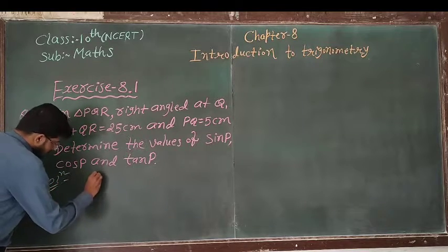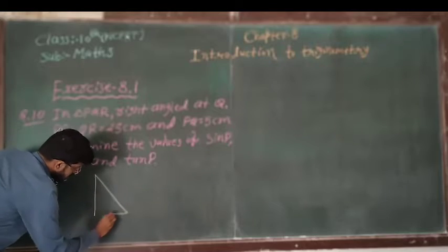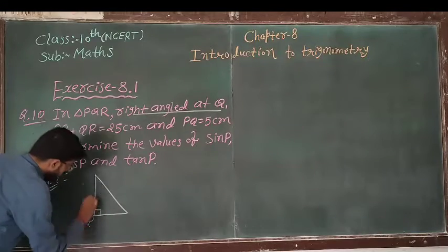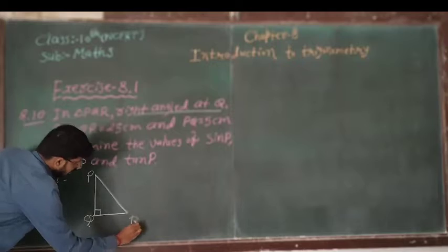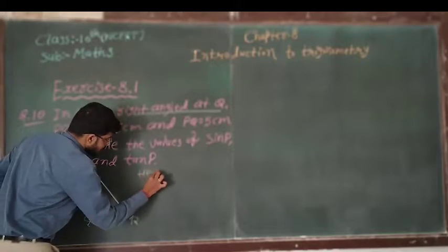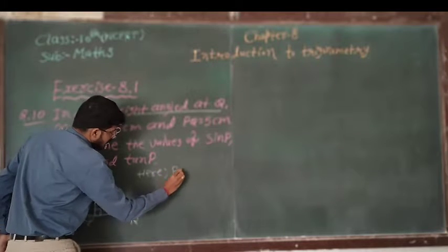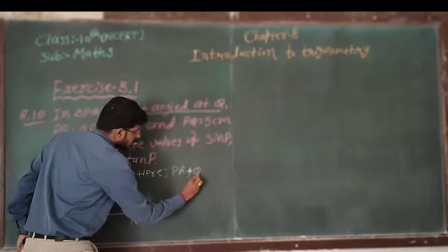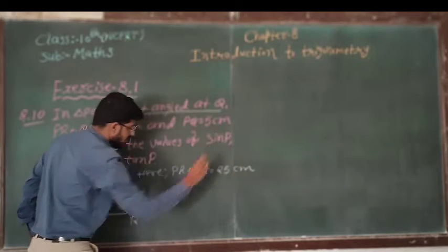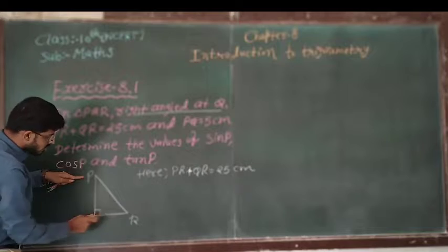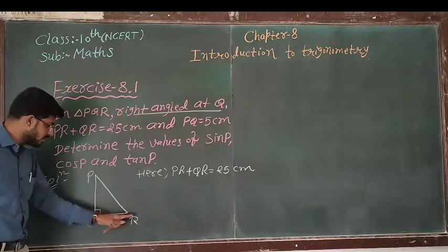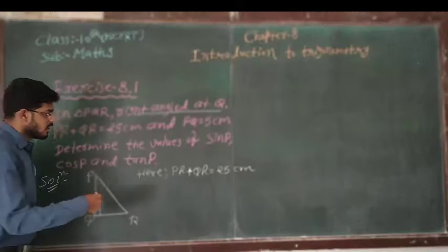Solution. Here, angle Q is the right angle. So, PR plus QR equal to 25 centimeter. Here, PR plus QR equal to 25 centimeter. It means the sum of these two sides, QR plus PR, will be 25 centimeter.